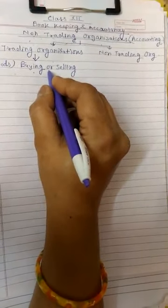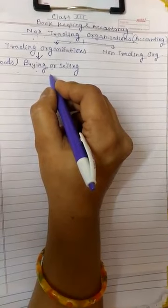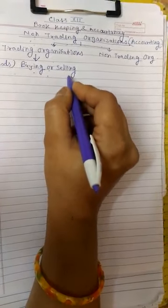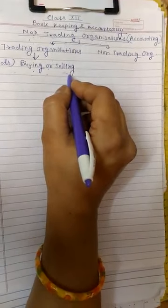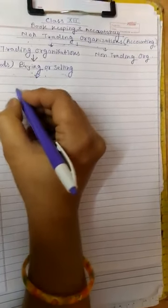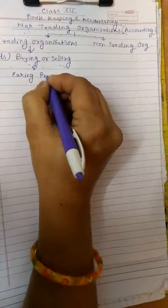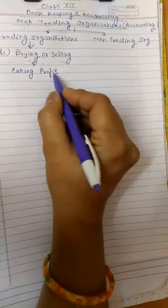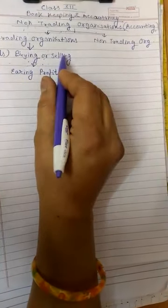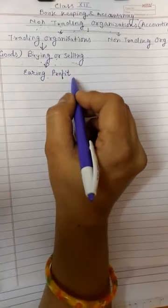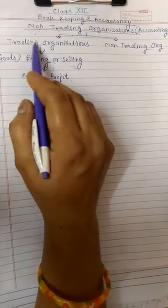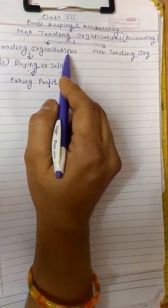Like buying and selling of utensils, buying and selling of toys, buying and selling of cloths, etc. And for the purpose of earning profit. Earning profit through the activity of buying and selling of the goods. This is the main object of trading organization.